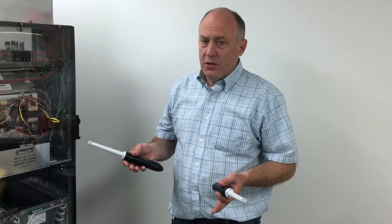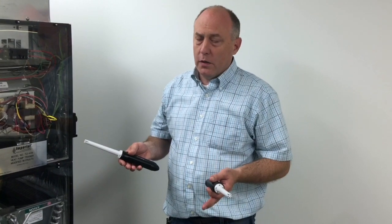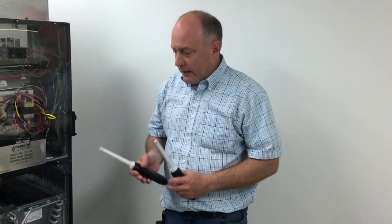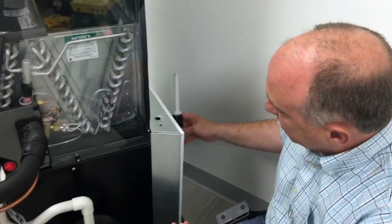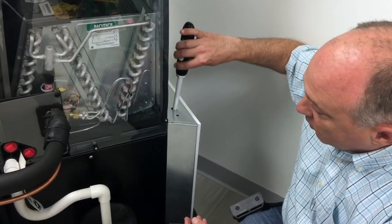This is the same if you're going to measure temperature split across any evaporator coil. You don't want to be right in line inside the coil. So again, you can see if we're going to measure, we should be on the side of the filter rack or in this hole here.